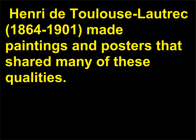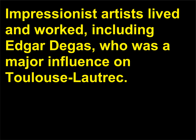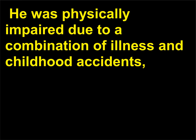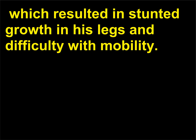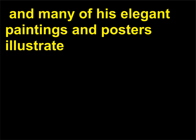Henri de Toulouse-Lautrec (1864–1901) made paintings and posters that shared many of these qualities. Toulouse-Lautrec was fascinated by the bohemian Montmartre, an entertainment district in Paris where many Impressionist artists lived and worked, including Edgar Degas, who was a major influence on Toulouse-Lautrec. He was physically impaired due to a combination of illness and childhood accidents, which resulted in stunted growth in his legs and difficulty with mobility. Perhaps because of this, he was enamored with the dance halls and nightclubs of Montmartre, and many of his elegant paintings and posters illustrate lively dancers and café patrons chatting, moving, and having a great time.